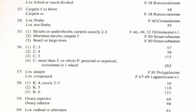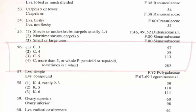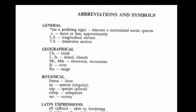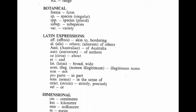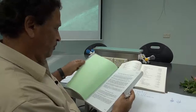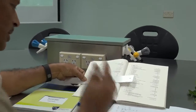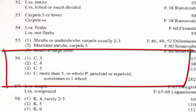We go to 56. There are several options in 56. C means corolla — all these abbreviations are at the front of the book; you can see the abbreviations and symbols shown there. At number 56, C means corolla, and we had five petals, corresponding to five petals here, and that takes us to step 113.